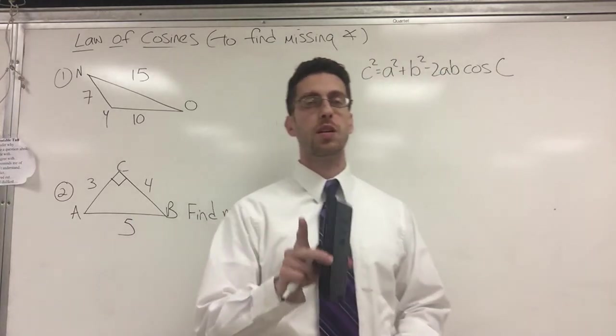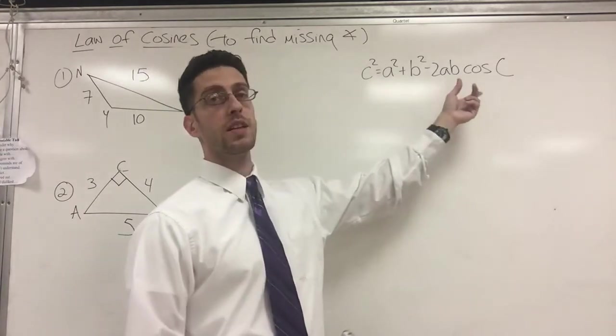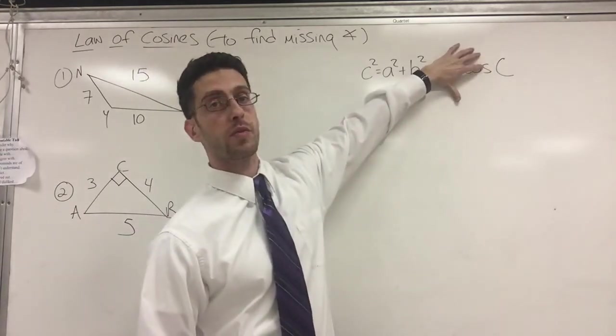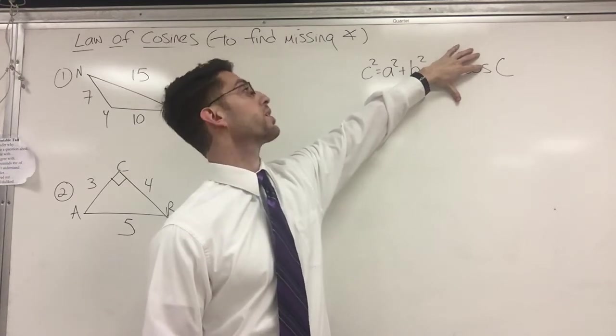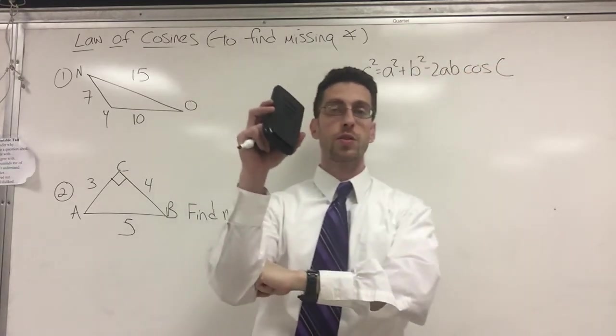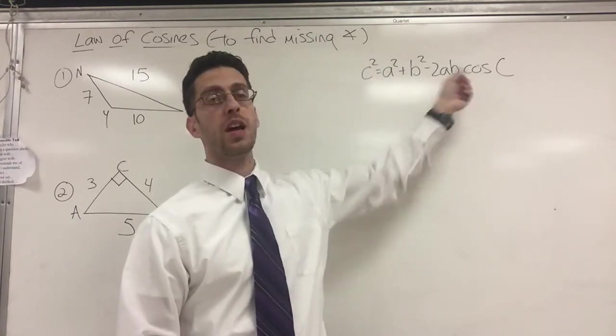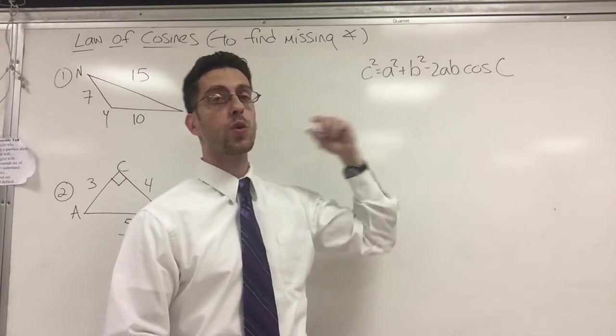So if you saw the other law of cosines video, you would know what this means. This is basically, if I hide this part of it, this is the Pythagorean Theorem, a squared plus b squared equals c squared. And that is useful in right triangles. But what if it's not a right triangle? We do this little adjustment and we can use it for all triangles.